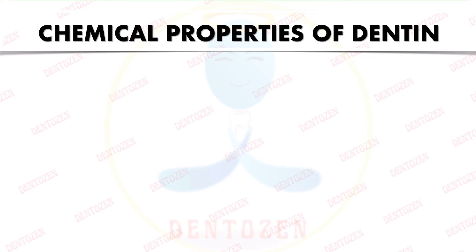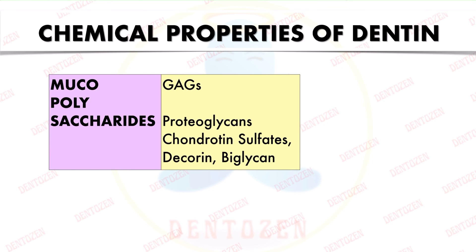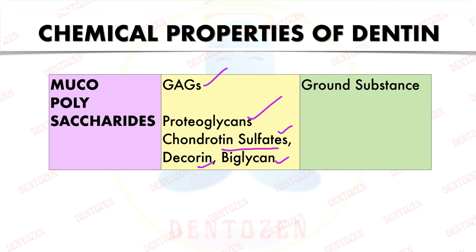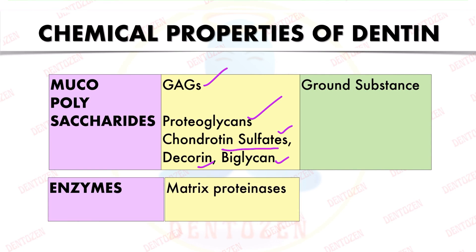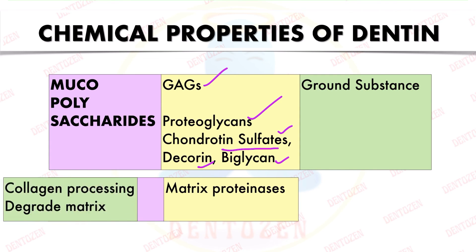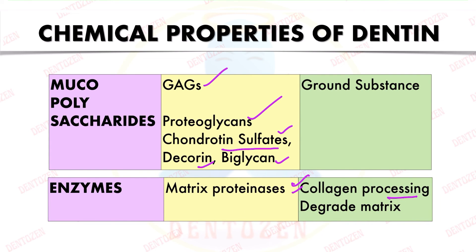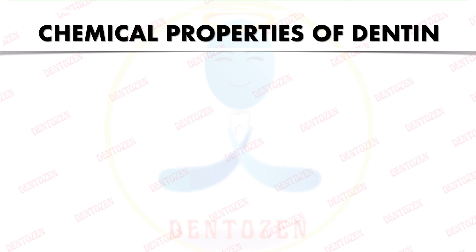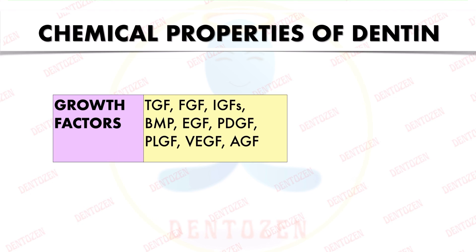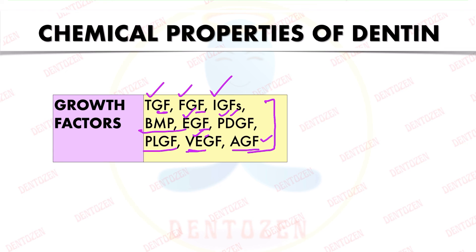Mucopolysaccharides — including glycosaminoglycans, proteoglycans, chondroitin sulfates, and decorin biglycan — act as the ground substance. Enzymes such as matrix metalloproteinases help in collagen processing and matrix degradation. Growth factors found in dentine include transforming growth factor, fibroblast growth factor, insulin-like growth factor, bone morphogenetic proteins, epidermal growth factor, platelet-derived growth factor, vascular endothelial growth factor, and angiogenic growth factor. These growth factors act as signaling molecules.